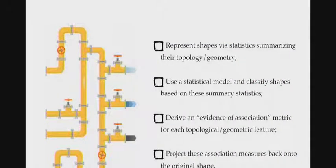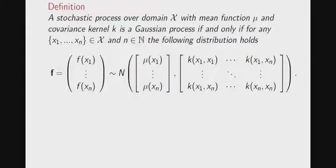We have a pipeline. If you don't like particular pieces of our pipeline, substitute your own. We need a representation of the shape, we need a statistical model, a regression model. We're going to use a nonlinear one. We need the notion of evidence of a feature. Then we need to project that back to the original shape. I already told you about representation, we're going to use Euler curve. Our regression model is a Gaussian process.